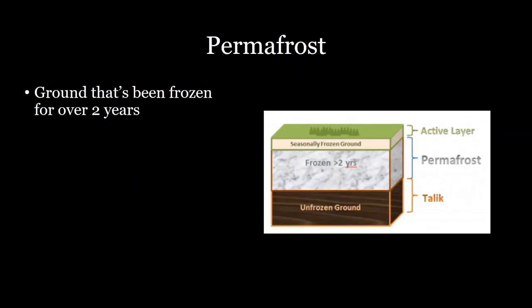Permafrost is just ground that's been frozen for over two years. The water that's in the pore spaces is frozen because the temperature is pretty low. And on top of that frozen layer, you usually have what's called the active layer, which is the layer of the soil in which you have seasonal thawing and freezing.